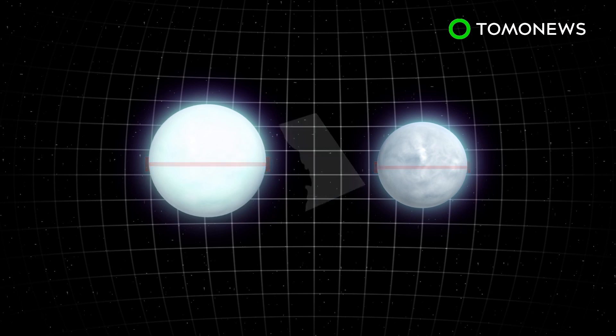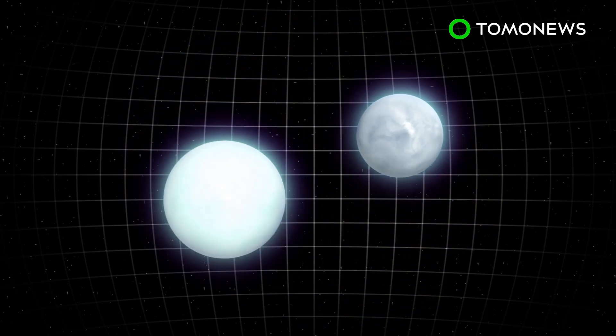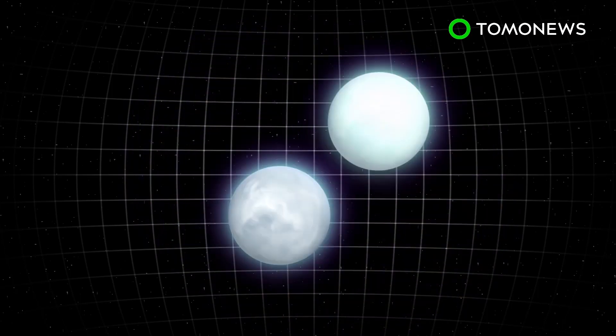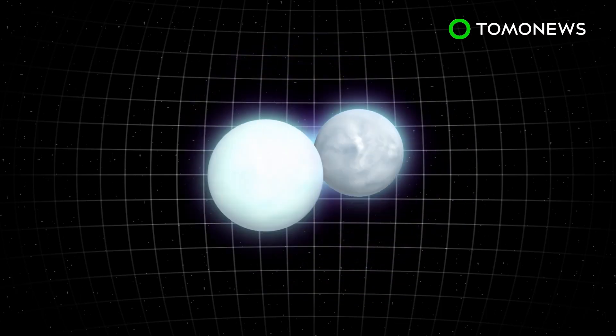The Space Telescope Science Institute says each neutron in this case was no wider than Washington, D.C. Typically, they're between 6 and 12 miles in diameter.